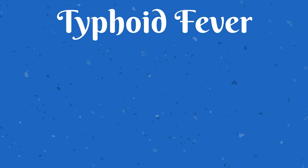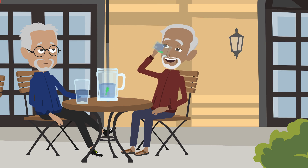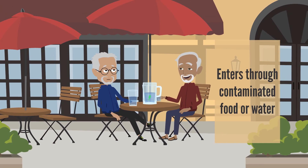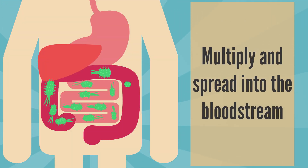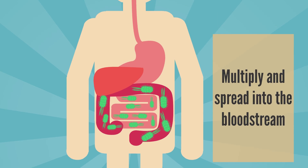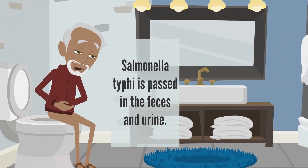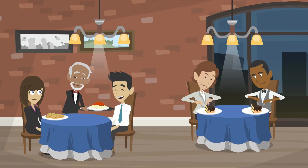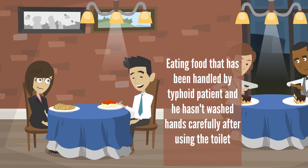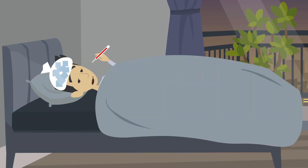Typhoid fever is caused by dangerous bacteria called Salmonella typhi. Once Salmonella typhi bacteria enter the human body through contaminated food or water, they multiply and spread into the bloodstream. Once the person is infected, he or she can spread it to others through the fecal-oral route. This means that Salmonella typhi is passed in the feces and sometimes in the urine of infected people. If you eat food that has been handled by someone who has typhoid fever and who hasn't washed hands carefully after using the toilet, you can become infected.